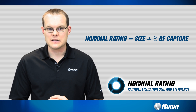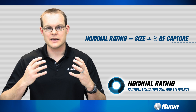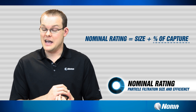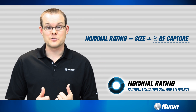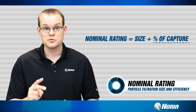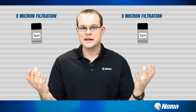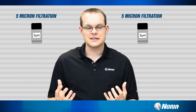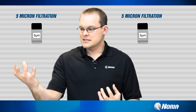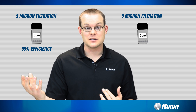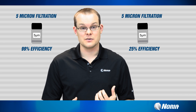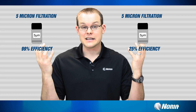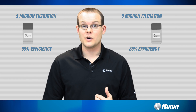When you tell me 5 micron filtration, that means nothing to me if you don't quantify it with an efficiency. How good is it at that 5 micron? Does it stop everything at 5 microns and above, or does it let 35% of it go through at that size? So if you're going to use nominal ratings, you have to have both a size and an efficiency. For example, you've got two filters in their boxes — both say they are 5 micron filters on the outside. But one might be a 5 micron filter with a 99% capture efficiency rate, and the other a 5 micron filter with only a 25% capture efficiency rate. Make sure if you're using nominal ratings that you are getting both a size and an efficiency.